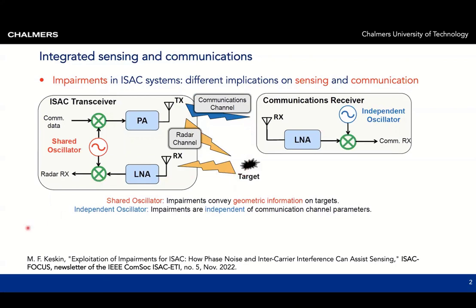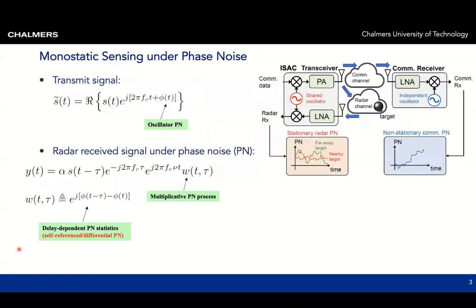For a broader perspective on this, I refer you to the documents listed below. Now let's go into a bit more mathematical detail. We consider the same setup with an ISAC transceiver and a communication receiver. The transmit signal in complex baseband is S of t, which is the communication waveform that is upconverted and is subject to phase noise.